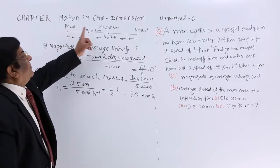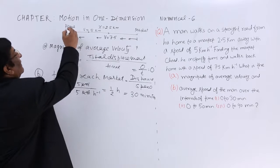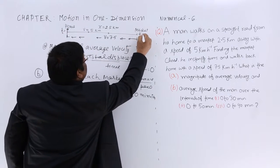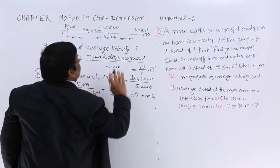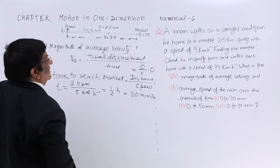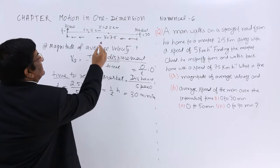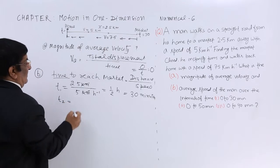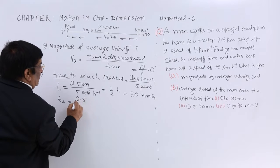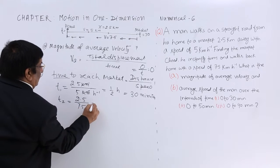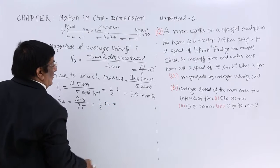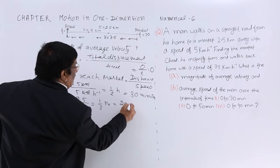He will reach from home to market in 30 minutes. Now he returns back with a speed of 7.5 km/hr. T2 for returning back: distance is 2.5 km divided by speed 7.5 km/hr = 1/3 hour = 20 minutes.